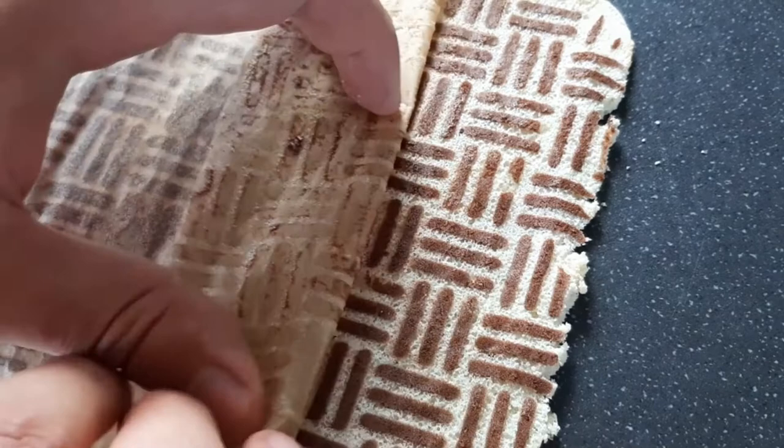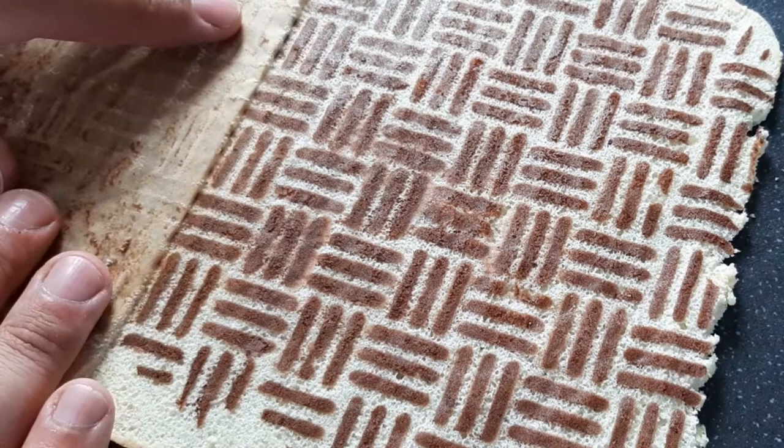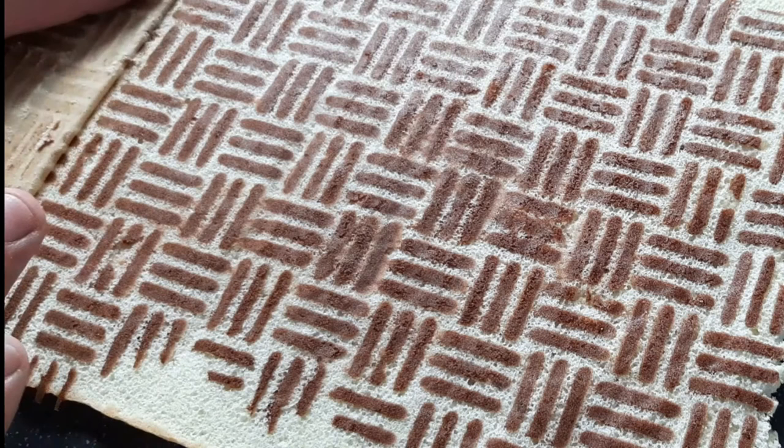Leave this to cool for about five minutes, and then you're going to flip it over and carefully peel off your baking paper. You could also use a silicone mat for this if you have one.